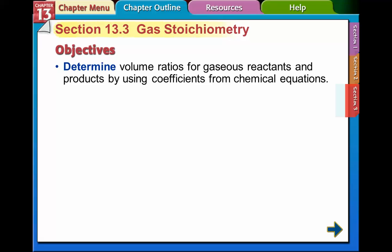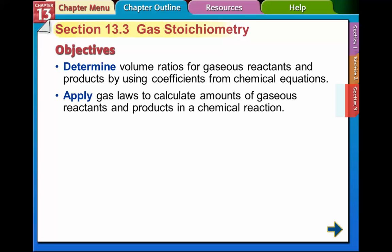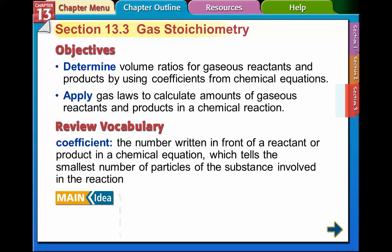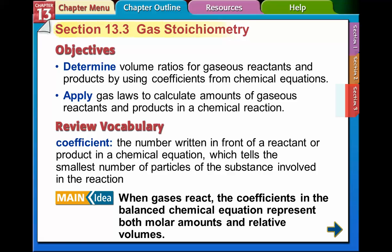All right, this is section 13.3, gas stoichiometry. We're going to use volume ratios for gaseous reactants and products. We're going to figure out how much of each one we have using the coefficients from the chemical equations. And we're going to apply gas laws to calculate the amount of gaseous reactants and products in a chemical reaction. The coefficients, the number in front of the reactant product, we know that.